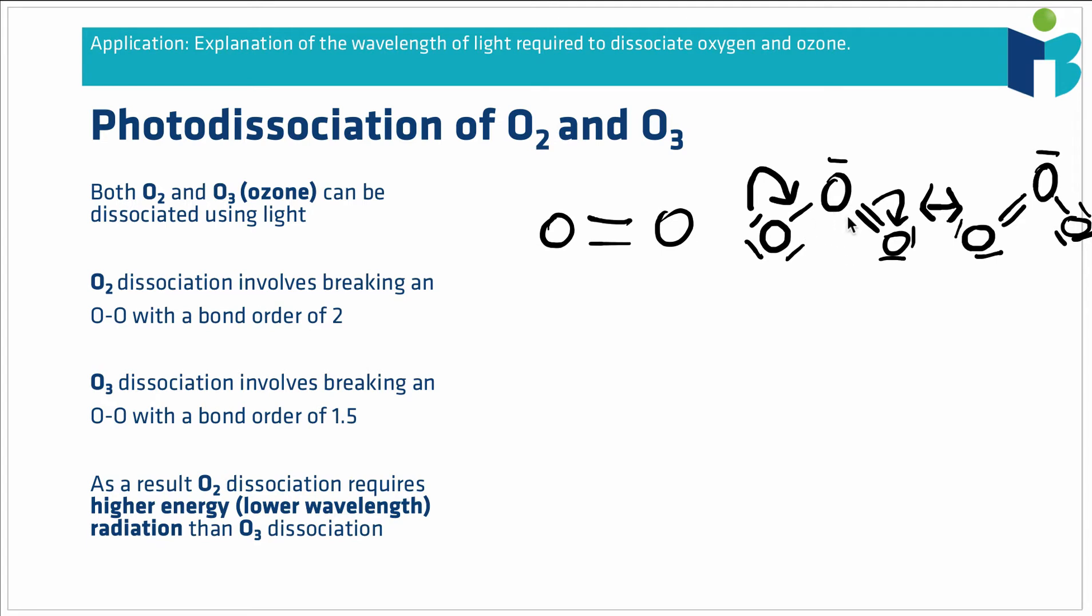What we find is that the overall structure of ozone is not one short strong double bond and one longer weaker single bond. We find that the bond strength and bond lengths of each of these oxygen-oxygen bonds are the same and they're somewhere between a single and a double bond.